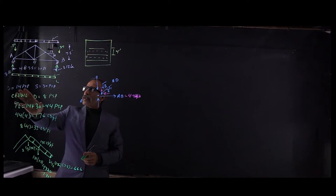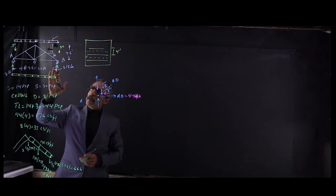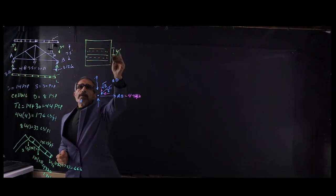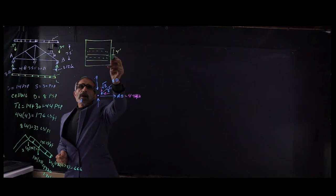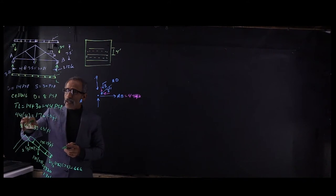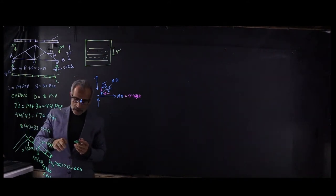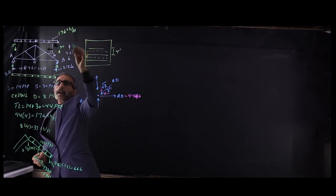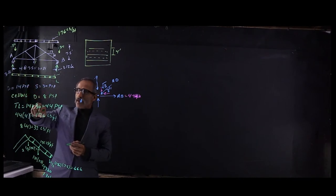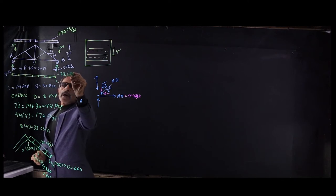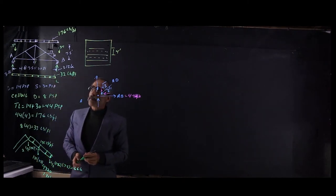Let's convert these loads, because they are given in pounds per square foot. These trusses are spaced every four feet, so the tributary width is four feet. The total roof load is 44 pounds per square foot — 44 times 4 gives 176 pounds per foot. The ceiling load is 8 pounds per square foot — 8 times 4 gives 32 pounds per foot.